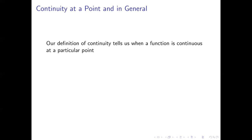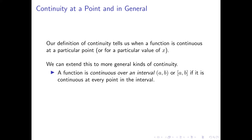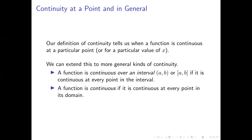We can also take our definition of continuity, which applies to particular points or particular x values, and generalize it. A function is continuous at a particular value x equals c if the limit as x approaches c of f of x equals f of c. We can extend this to say a function is continuous over an interval if it's continuous at every individual point in the interval. Or we can say a function is continuous without any qualification if it's continuous at every point in its domain. This transforms general continuity questions into questions about continuity at individual points, which we examine using our limit definition.